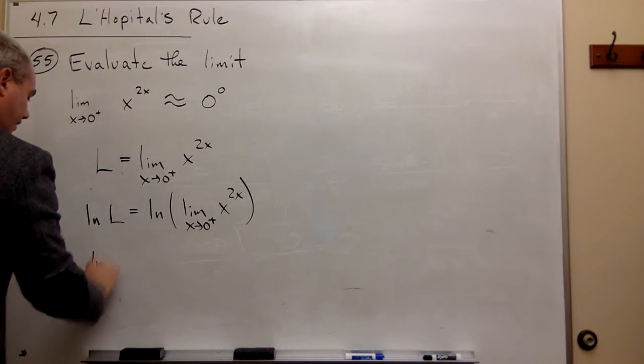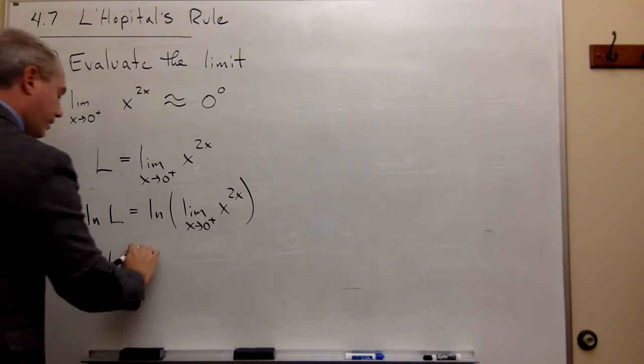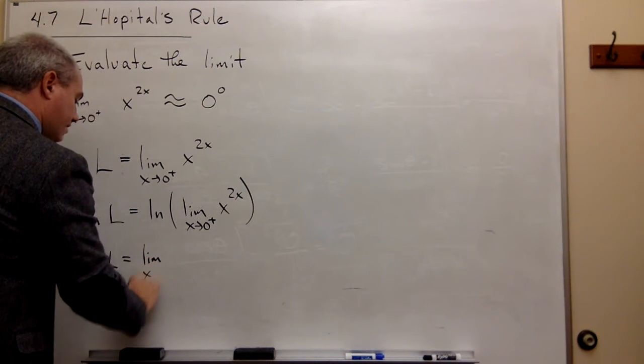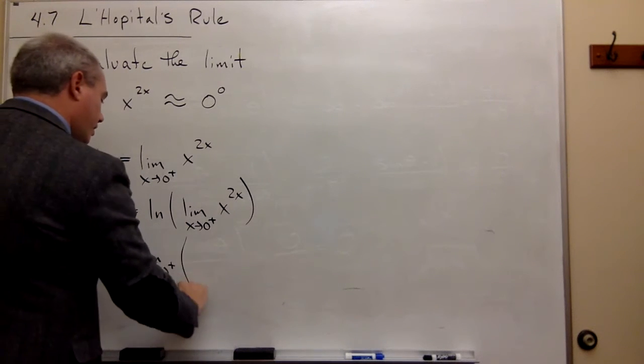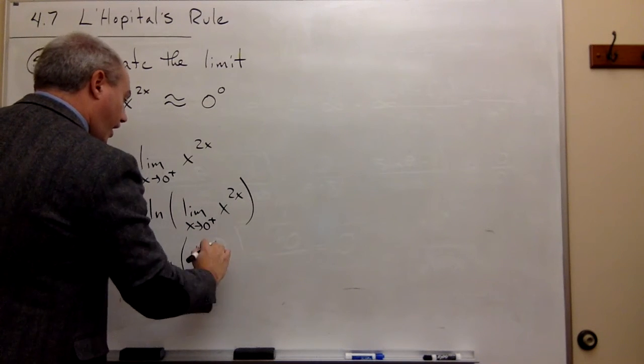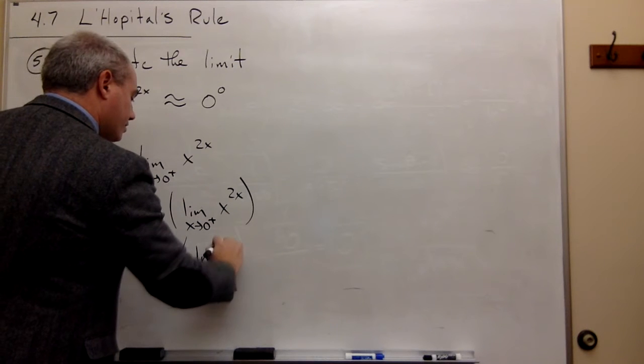And I get that ln of L is equal to the limit as x goes to zero from the right of ln of x to the 2x.